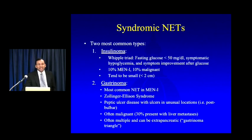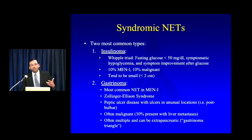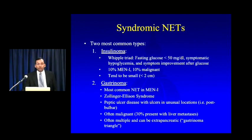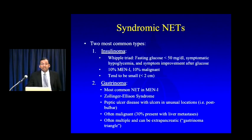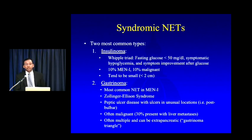Syndromic NETs are clinically evident because they produce enough hormone to cause endocrinopathy, so they tend to present when smaller — most often under three centimeters. Insulinomas tend to be small and relatively benign — only 10% are malignant — associated with Whipple's triad: hypoglycemia, symptomatic hypoglycemia, and symptom improvement after glucose administration. Gastrinomas, on the other hand, are much more often malignant — about 30% present with liver metastases, they're often multiple and not uncommonly extrapancreatic, arising in the so-called gastrinoma triangle, causing peptic ulcer disease and Zollinger-Ellison syndrome.